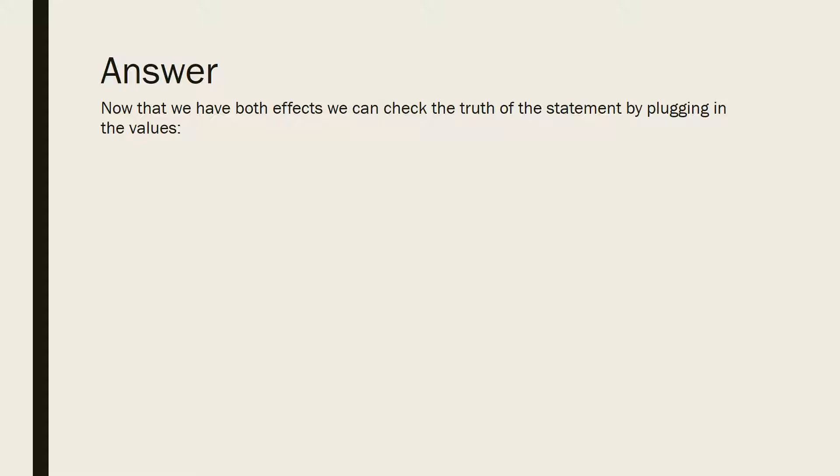So now that we have both effects, we can check the truth of the statement by plugging in the values. So as we can see from the math of the Slutsky equation that if we come to the same answer as deriving the Marshallian demand equation directly, which is going to be beta 1, that's going to be the partial effect if we go and see a change in price.